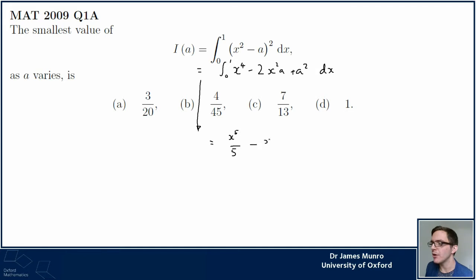So x to the 5 over 5 minus 2x cubed a over 3, there's still a 2 in here isn't there, plus a squared x between 1 and 0. People will shout at me in chat if I get this easy integral wrong, right? I almost missed that 2 there, wish me luck everyone.